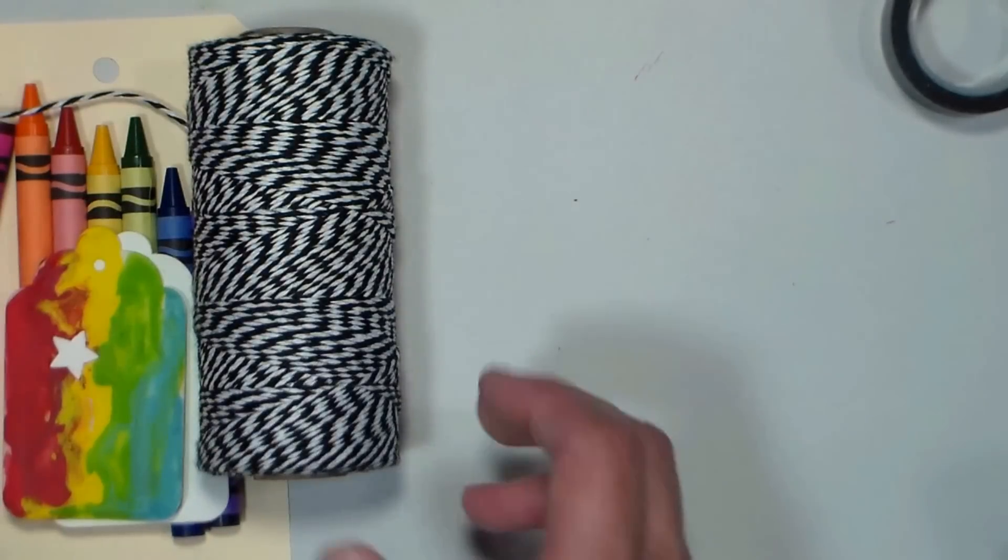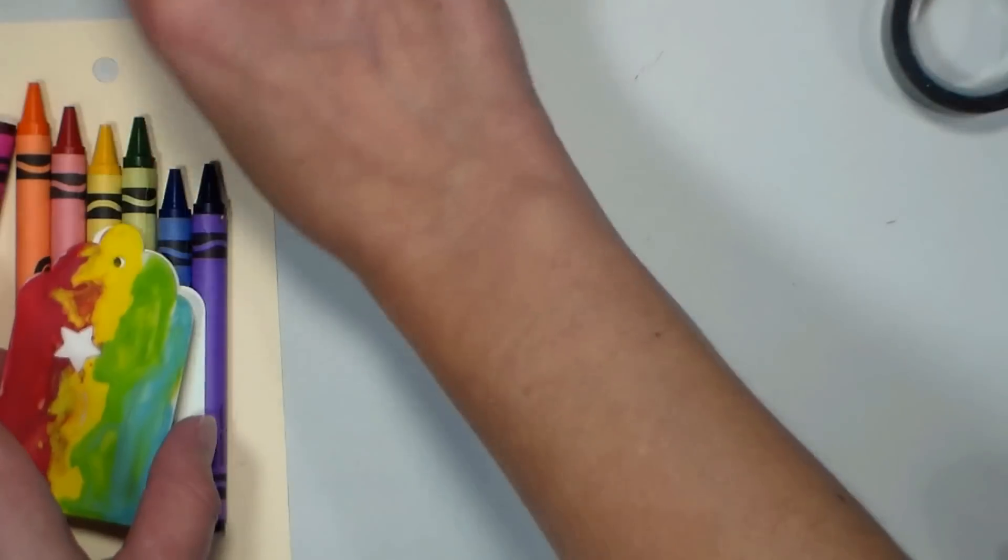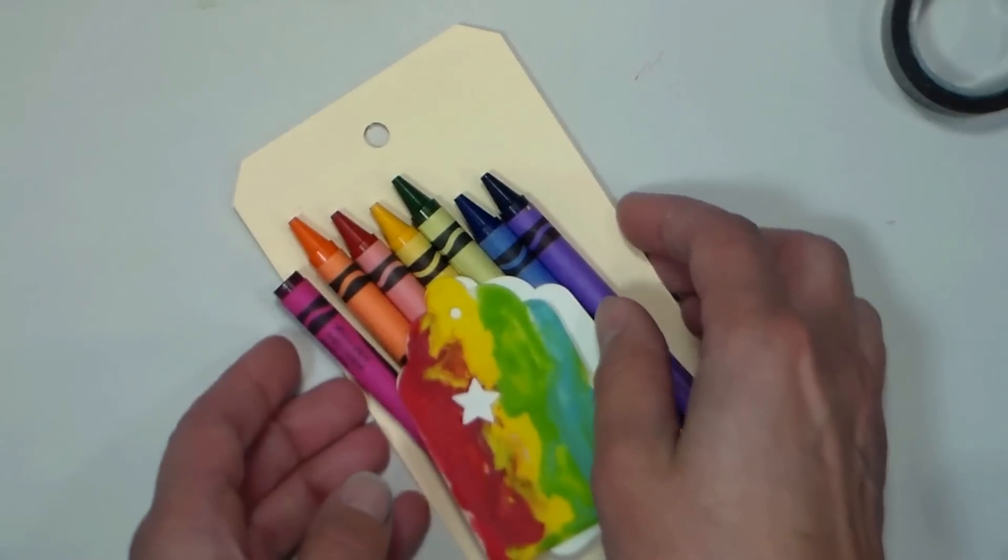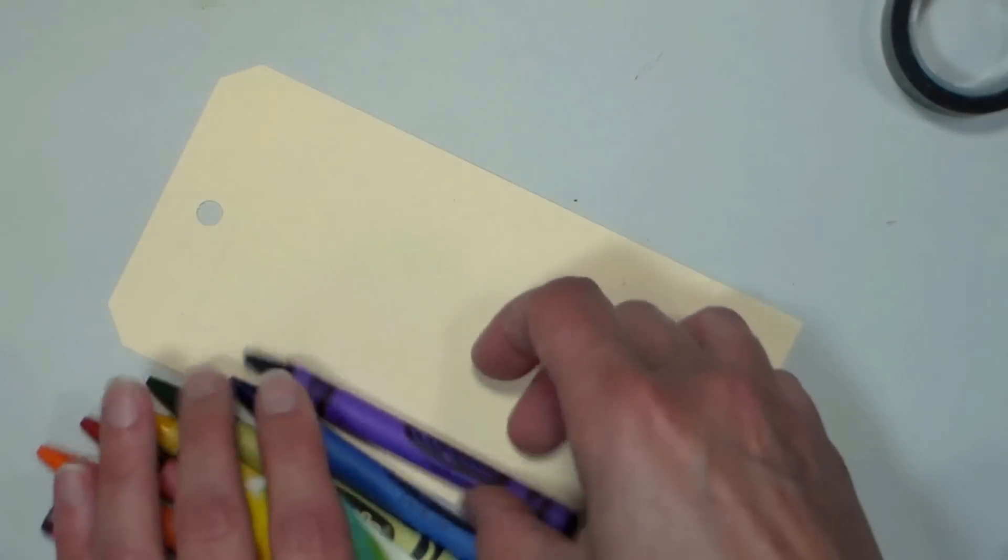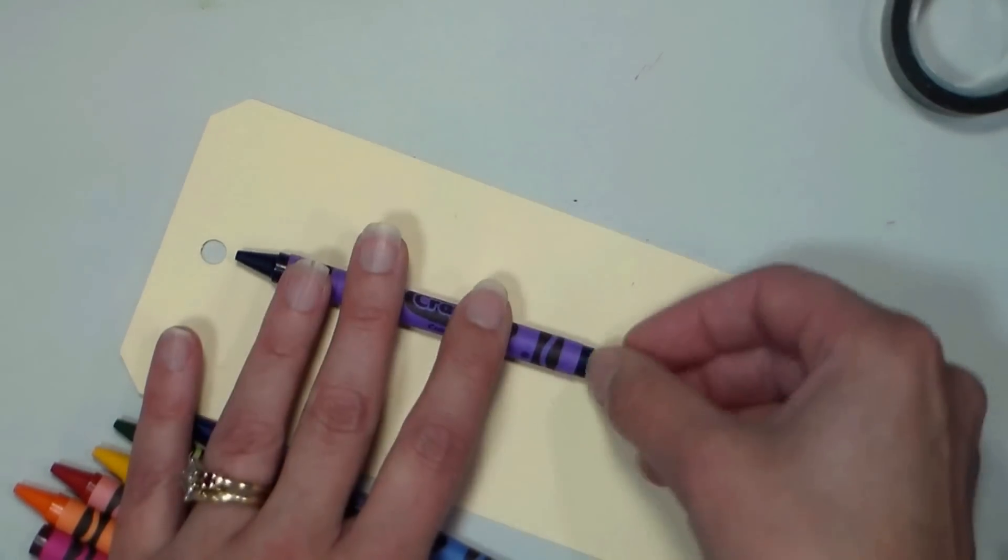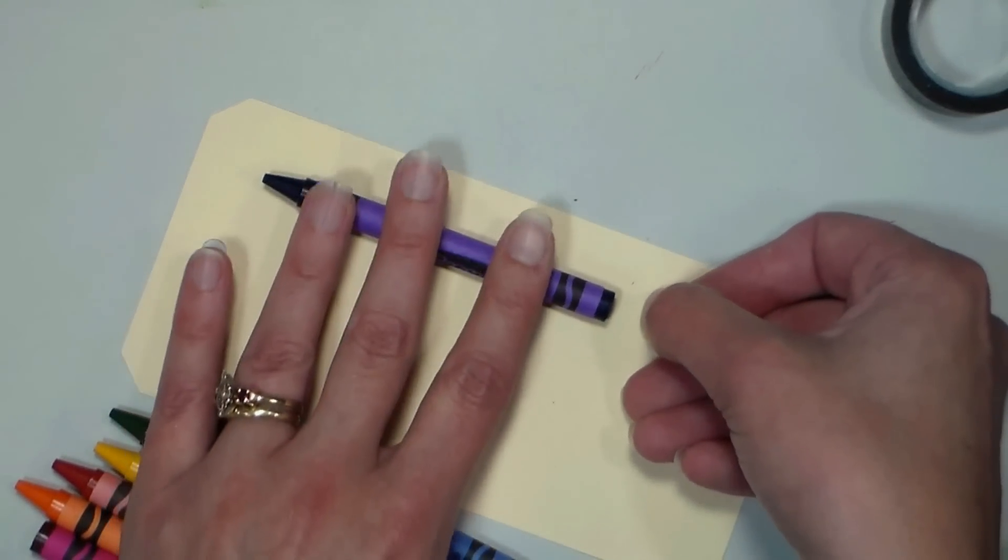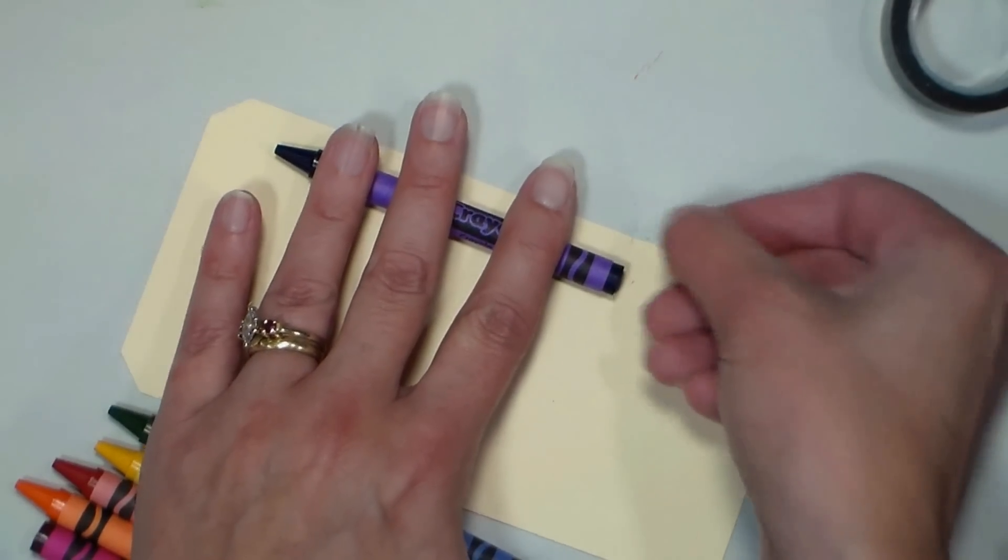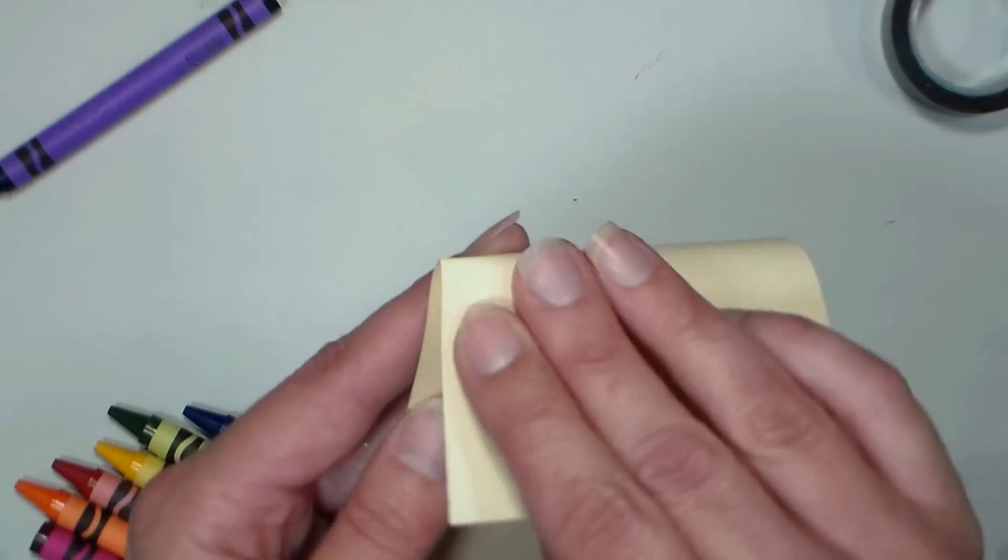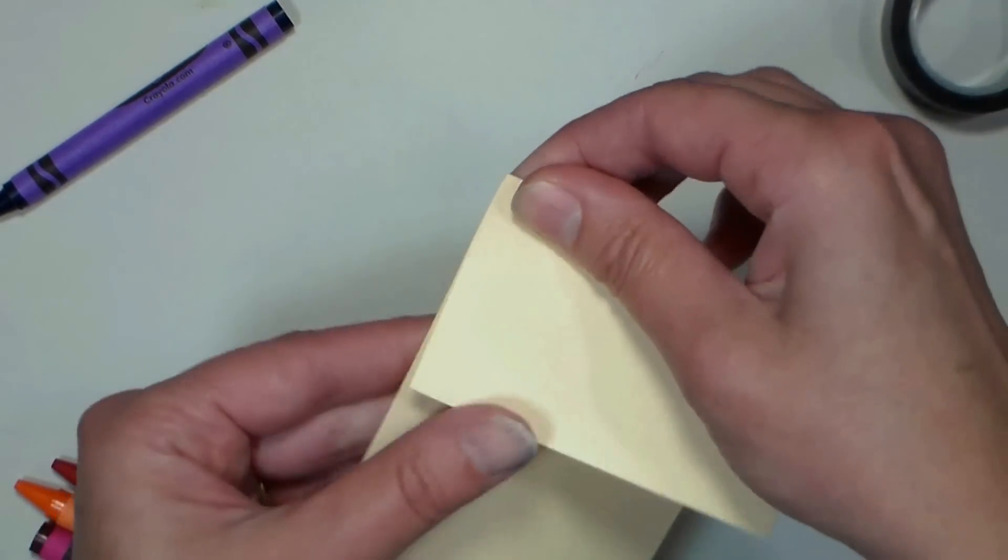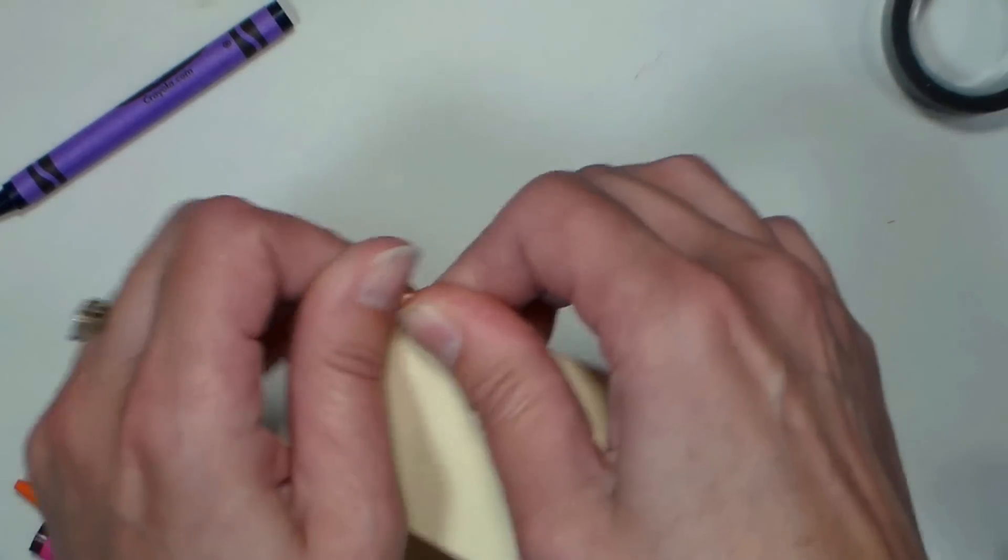So the first thing we're going to do is figure out about how big we're going to need our little packet here. I'm just going to put my crayon there, and I can see I'm just going to roll it over to the edge. I need to fold it right about there, and you can do this with a scoring board, but you know what, I find that you can do this pretty easily with your fingers.